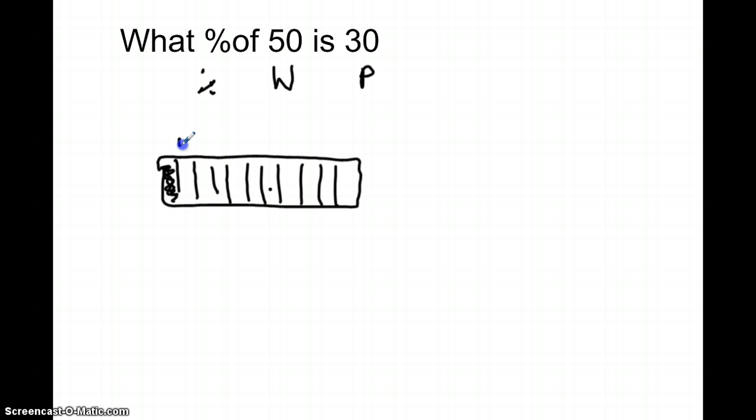All right, so we have 10 equal pieces again. Each piece is worth 10%: this is 10, 20, 30, 40, 50, 60, 70, 80, 90, and a hundred percent. In this problem, I do have the whole amount, I have everything that's in my savings account, so the total tape diagram is worth 50. So again, I would divide it into 10 equal pieces, which would make 5 per piece.